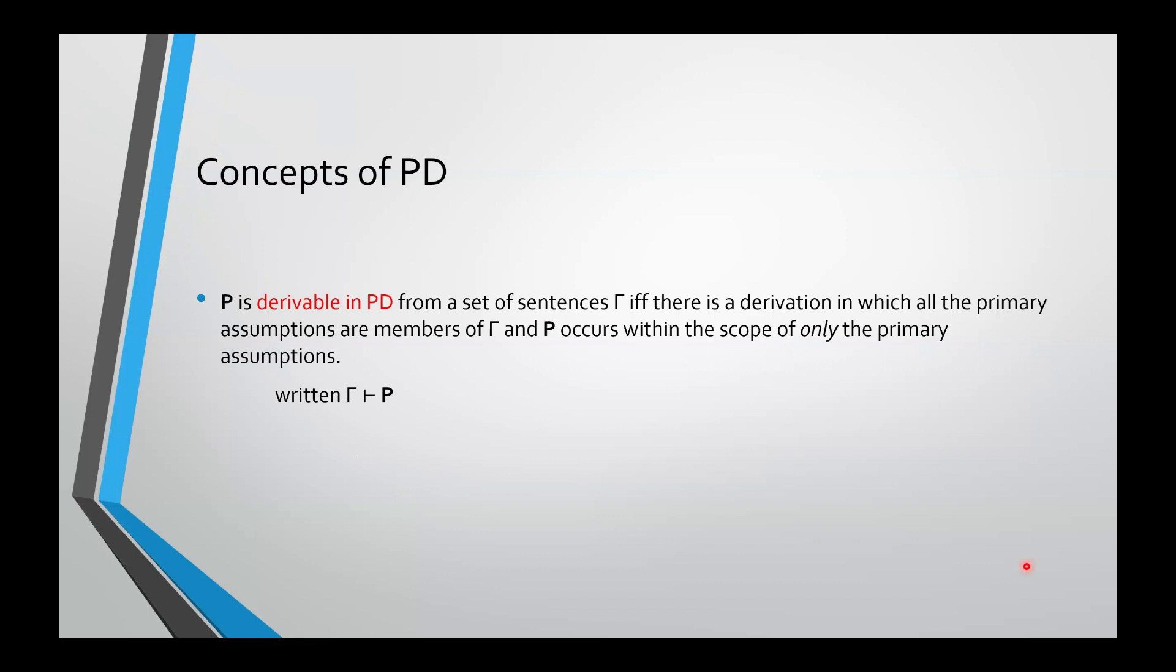These correspond almost exactly to the concepts of SD that you've already seen. So a sentence is derivable in PD from a set of sentences gamma, if and only if there's a derivation in which all the primary assumptions are members of gamma, and P occurs within the scope of only the primary assumptions. And of course, we write it using the single-turn style, same as in SD.